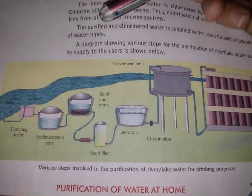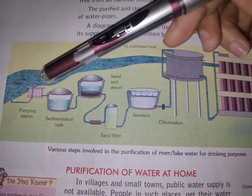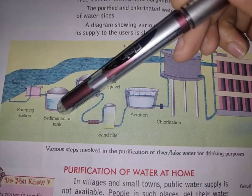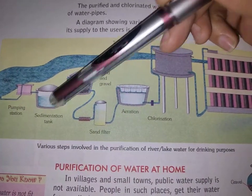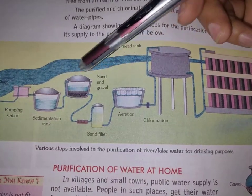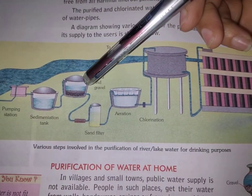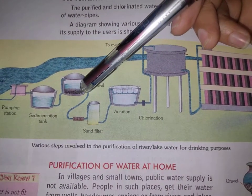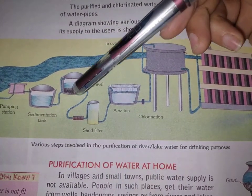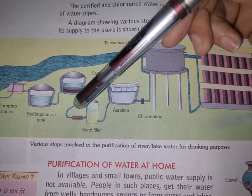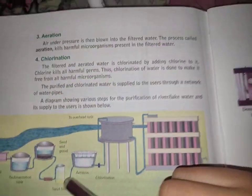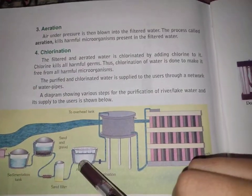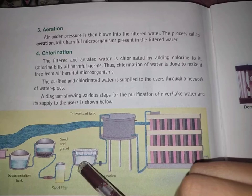As clearly shown in the diagram: this is the pumping station, which sends water to the sedimentation tank where sedimentation occurs. Then the water goes to the filtration tank — this is the sand and gravel layer — and from there the filtered water comes through the pipe to the next step, which is aeration. This is the sand filter step.